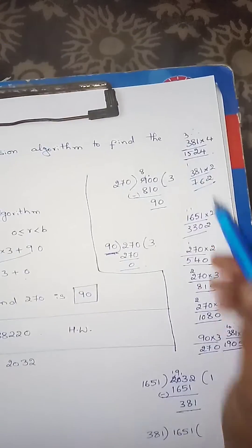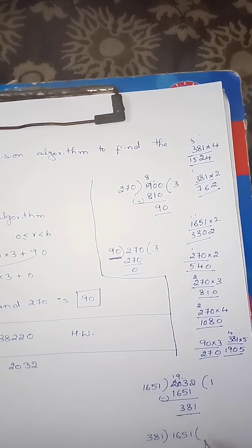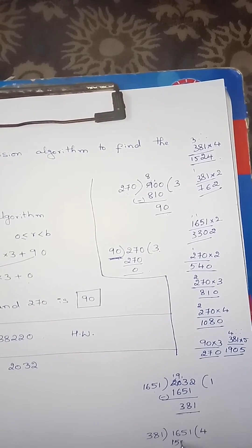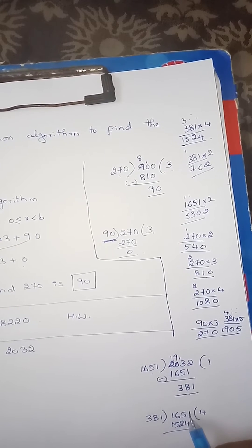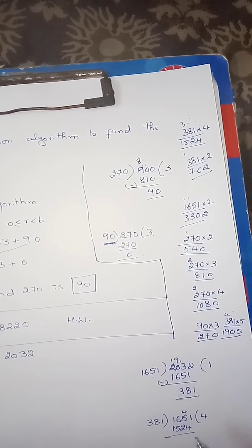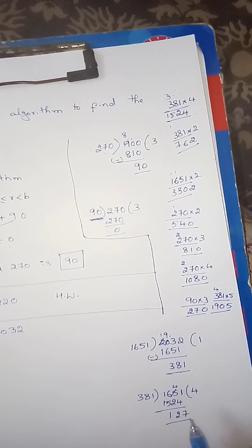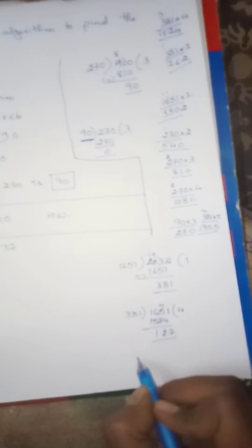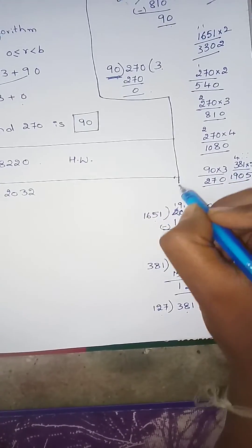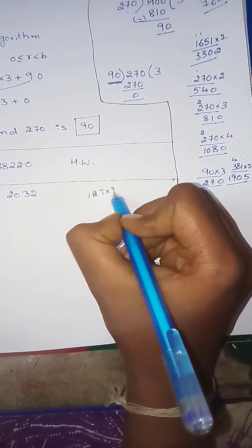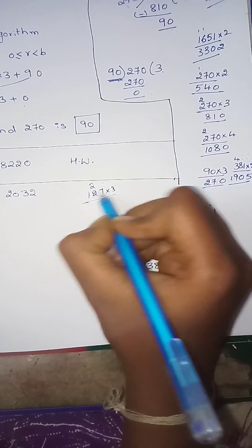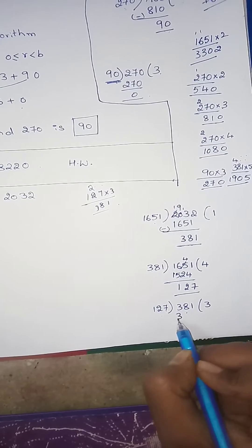381 into 5 is too large. We try 381 into 4, giving value 1524. Subtracting 1524 from 1651 gives 127. So quotient is 4, remainder is 127. Then 381 divided by 127: quotient is 3, remainder is 0.